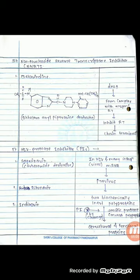This is the fourth category: Non-Nucleoside Reverse Transcriptase Inhibitors, short form NNRTI. The first drug is delavirdine. This is the structure of delavirdine. These drugs form a complex with the reverse transcriptase enzyme, inhibiting it and causing chain termination.